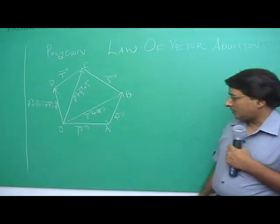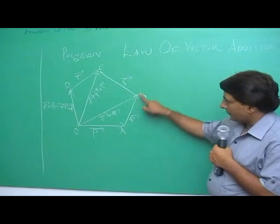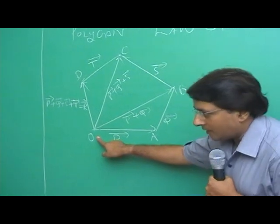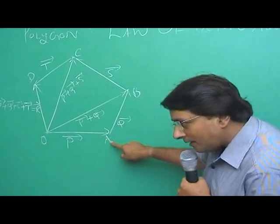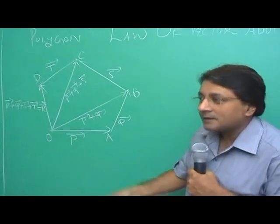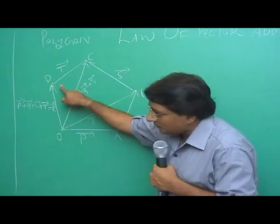If we have vector p, vector q, vector s, vector t represented by the sides of a regular polygon OA, AB, BC, and CD, then the resultant is completely given by the closing side OD.